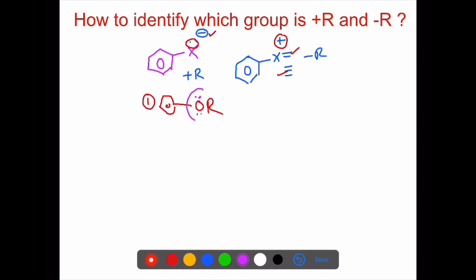Second example: OH (alcohol). Is it plus R or minus R? Benzene attached — the first atom is oxygen. The first atom has how many lone pairs? Two lone pairs. So this group is plus R.